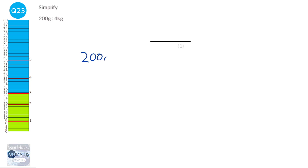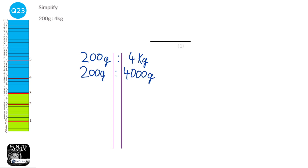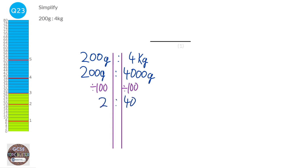We've got to first make both the same units, because at the moment they are different units. When we have ratios, we always want to make sure they have the same units, then we can get rid of the units. I'm going to make them both into grams by multiplying the right by a thousand. It's better to pick the smaller unit so we don't end up with a decimal. Then we divide both sides by 100, giving 2 to 40. Dividing both by 2 gives 1 to 20.